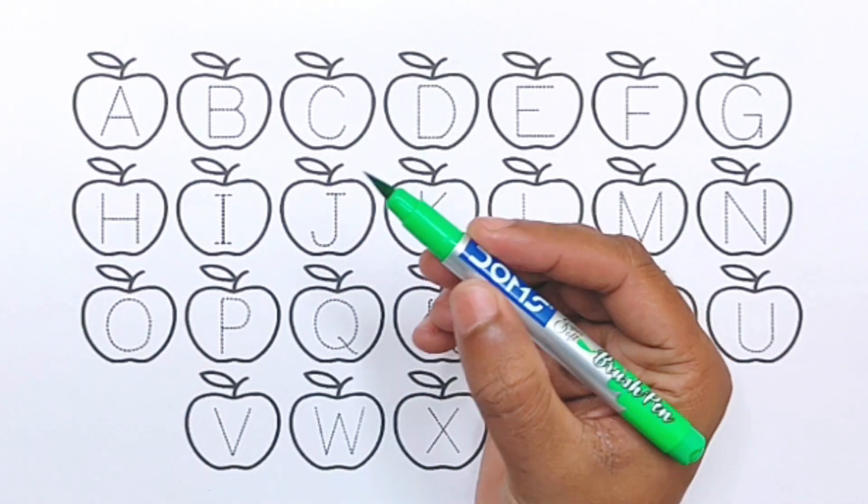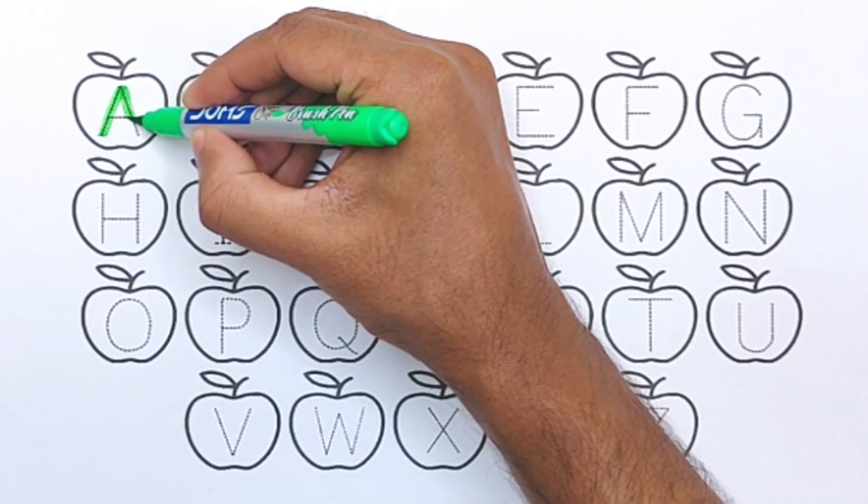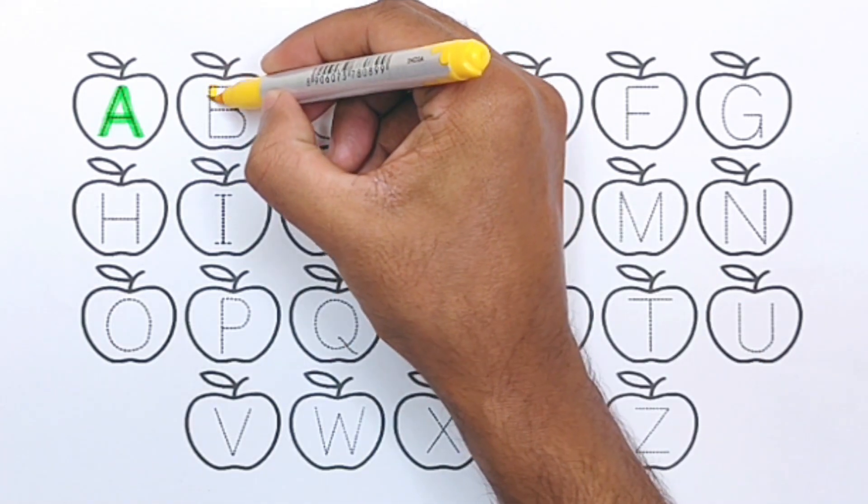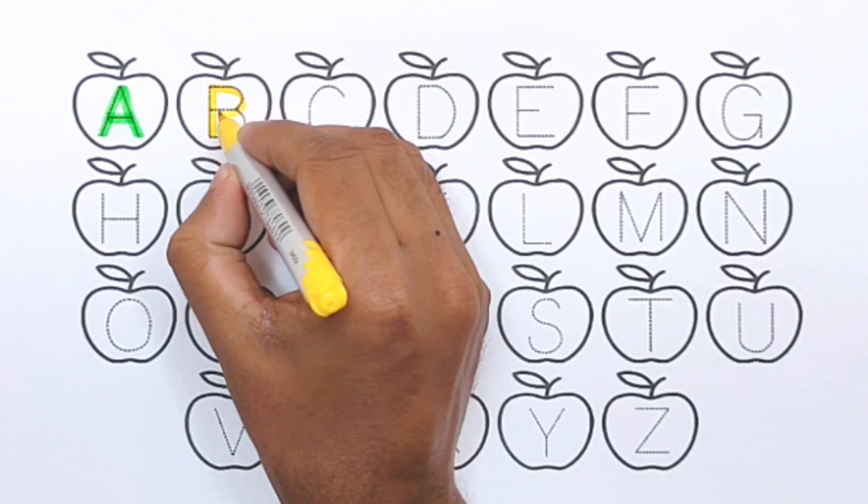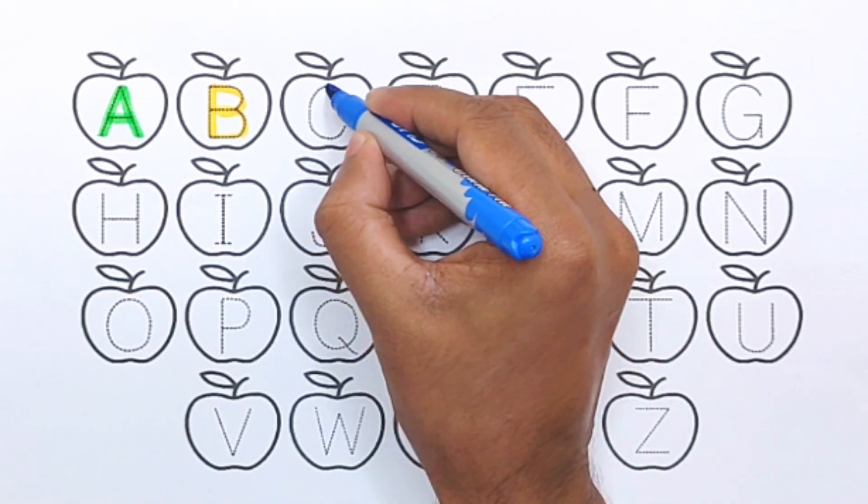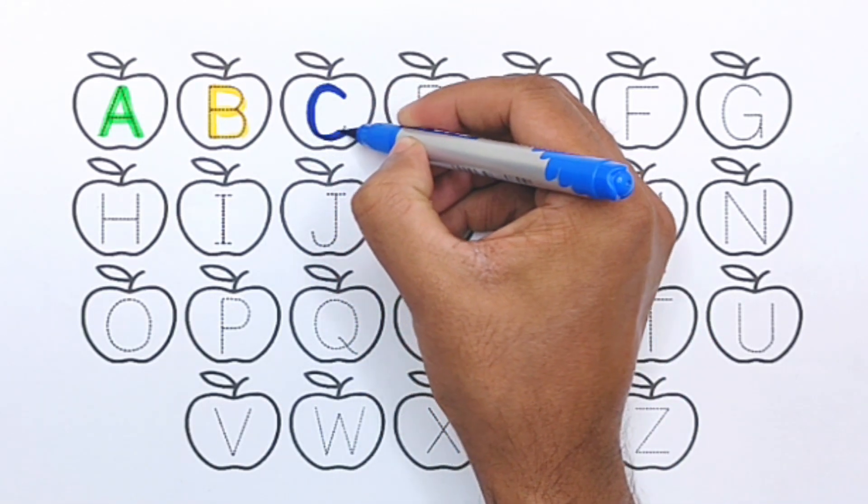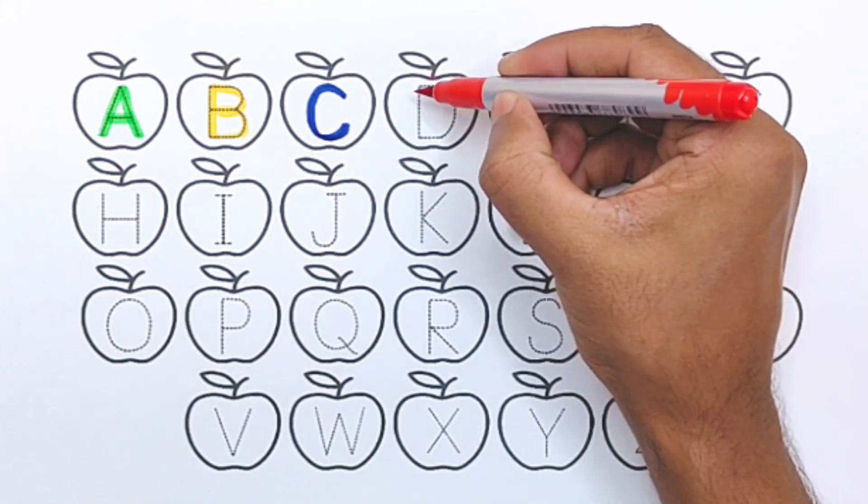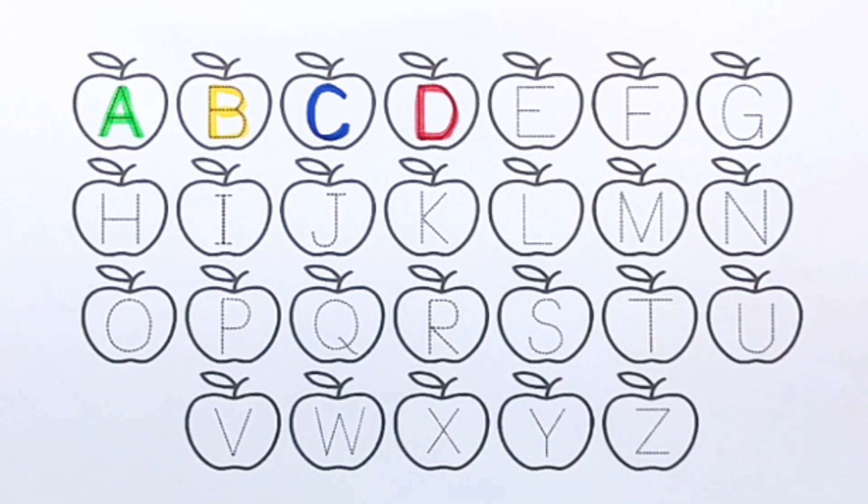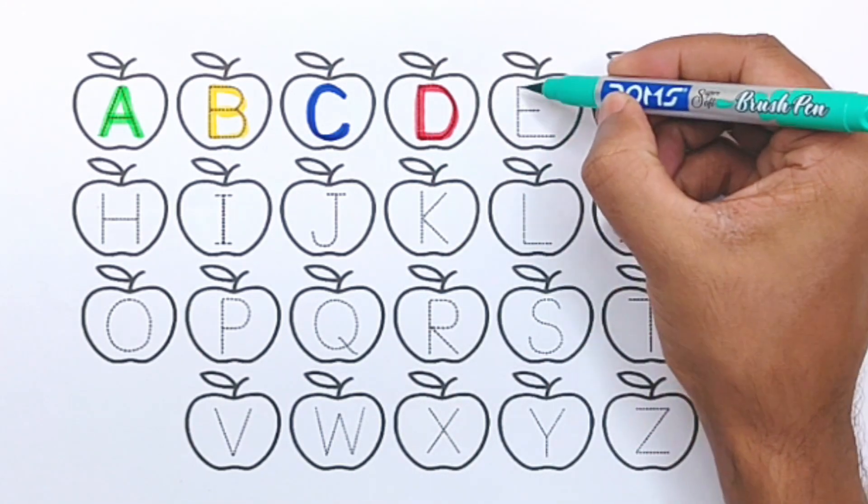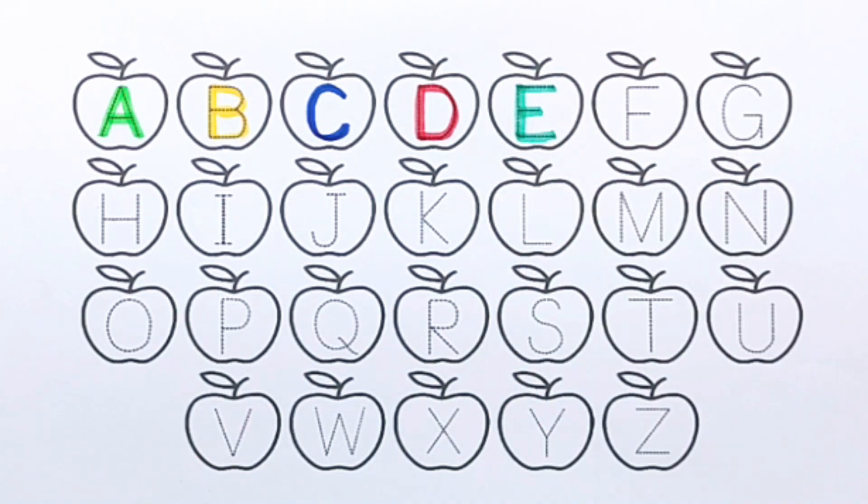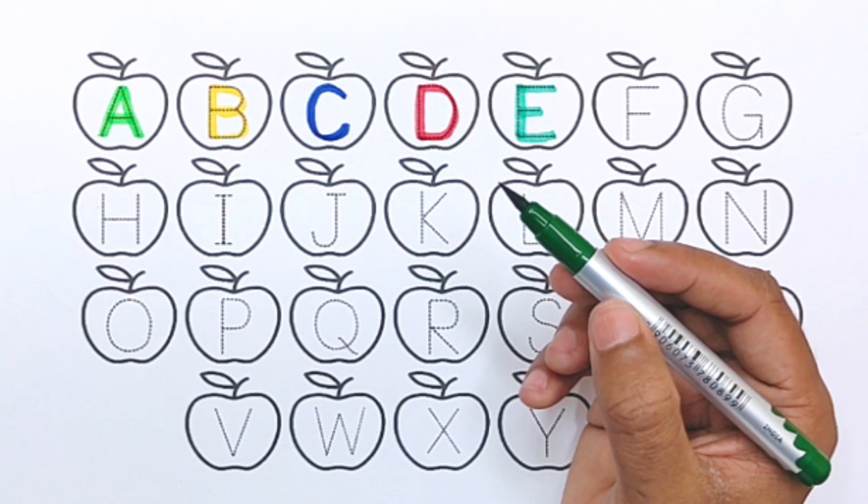Light green color. A, A for apple. Yellow color. B, B for banana. Blue color. C, C for cat. Red color. D, D for dog. Sea green color. E, E for egg. Green color. F, F for fish.